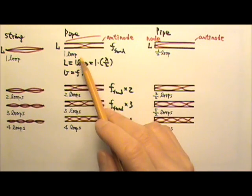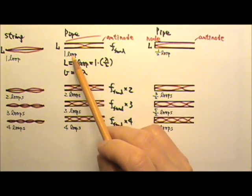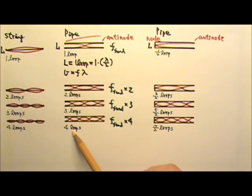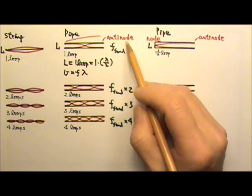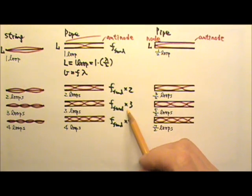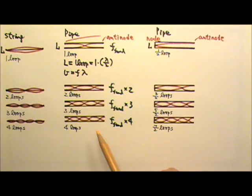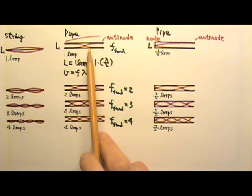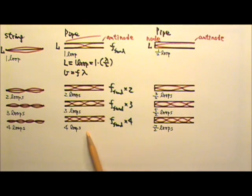Because the number of loops fit into the pipe changes by a factor of 1, 2, 3, 4, so this is fundamental frequency. This will be the fundamental frequency times 2 times 3 times 4. For symmetric situations, whether it's a string or a pipe, we can hear all of the harmonics.